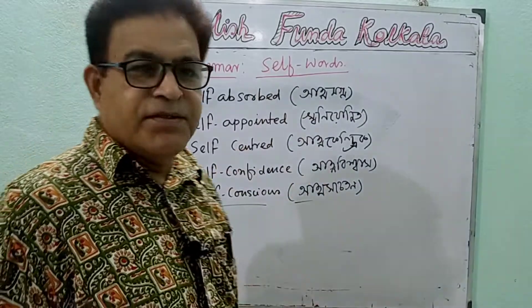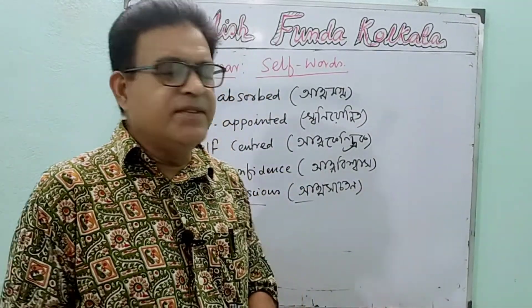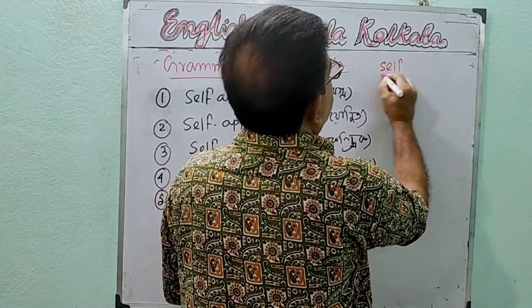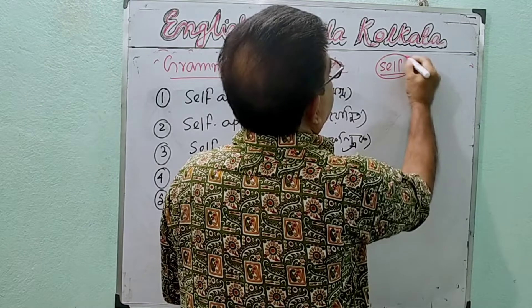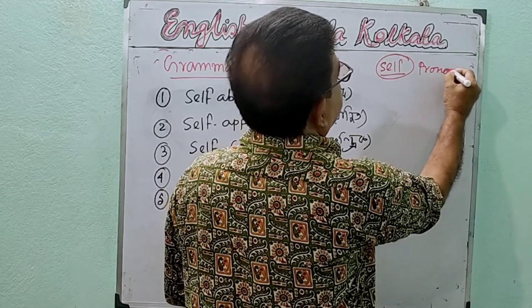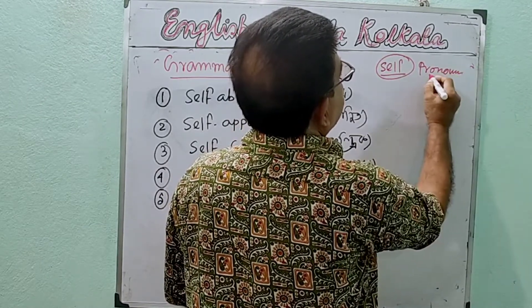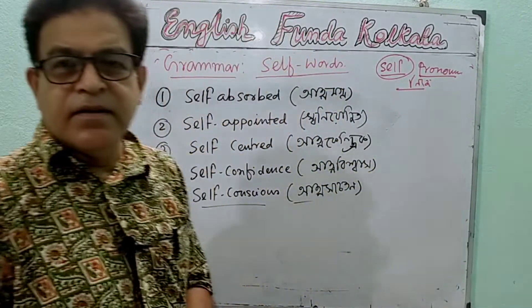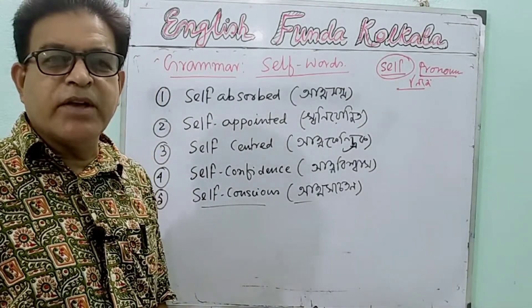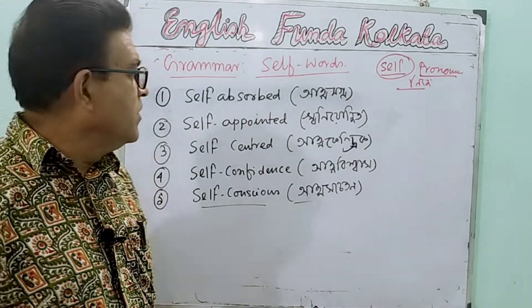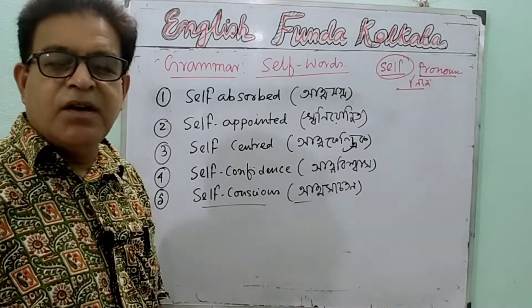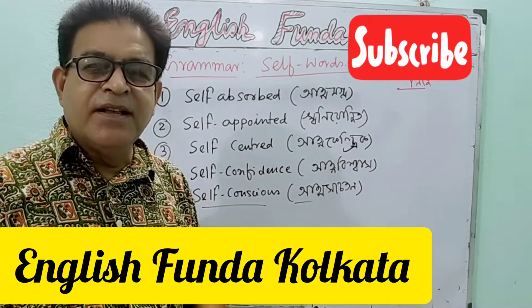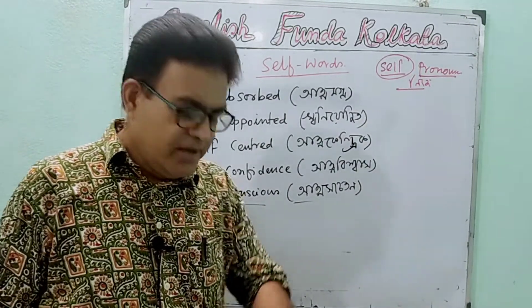Self-words. Self-absorbed — the person who only thinks of himself, that type of person is called self-absorbed.